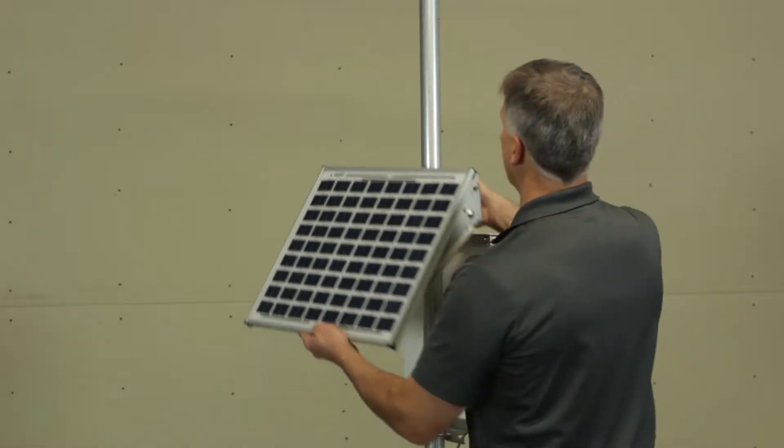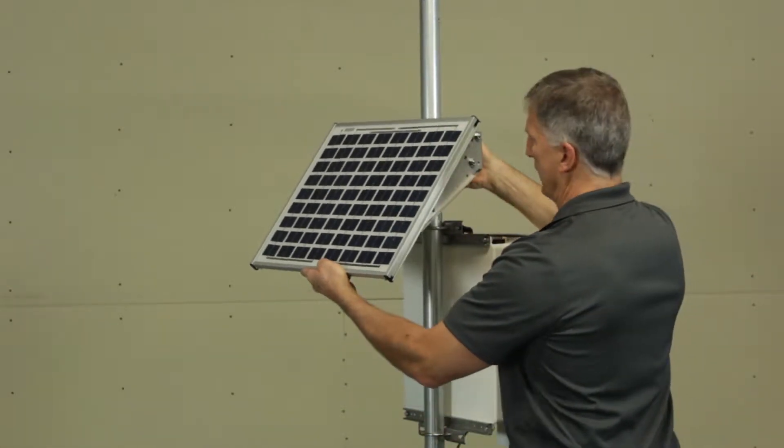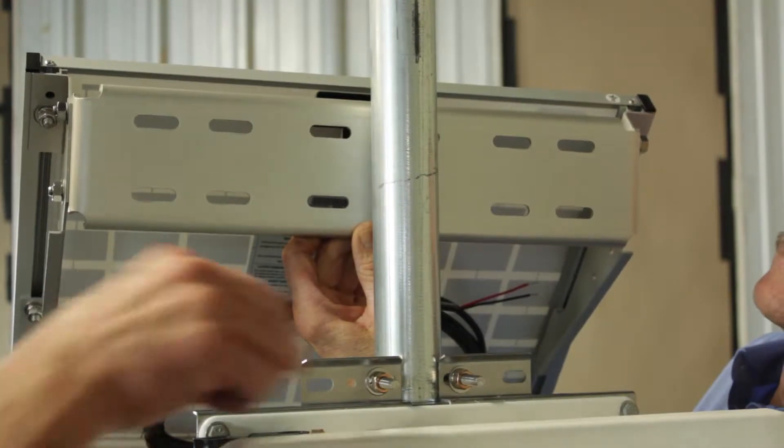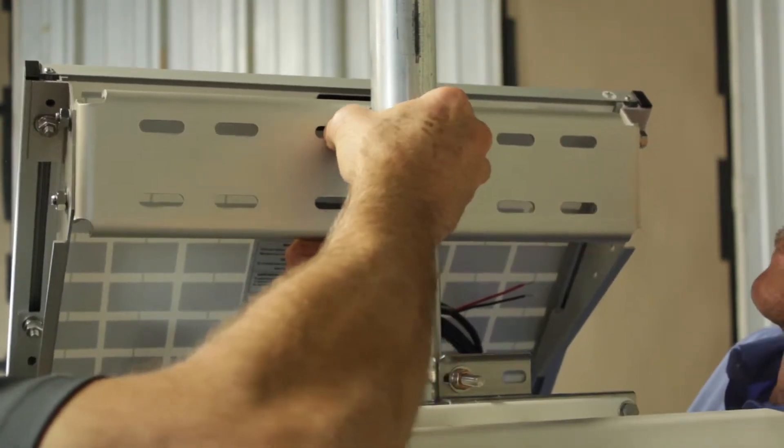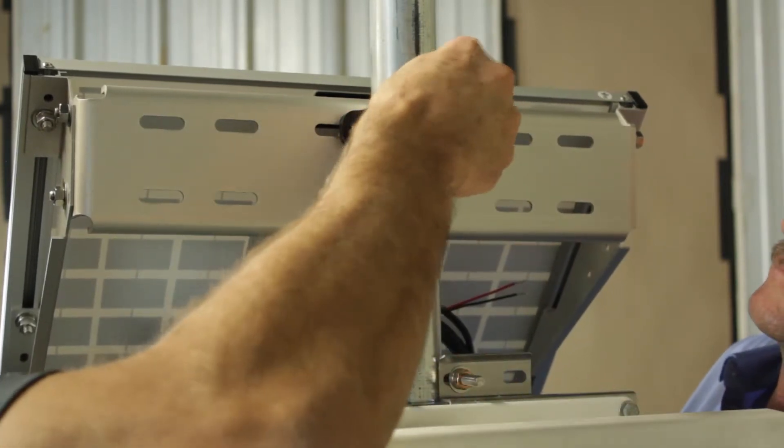Place the solar panel at the desired height and orientation. Insert the black spacer between the solar panel and the mast, aligning it with the upper set of holes. The flat side of the spacer goes against the solar panel.